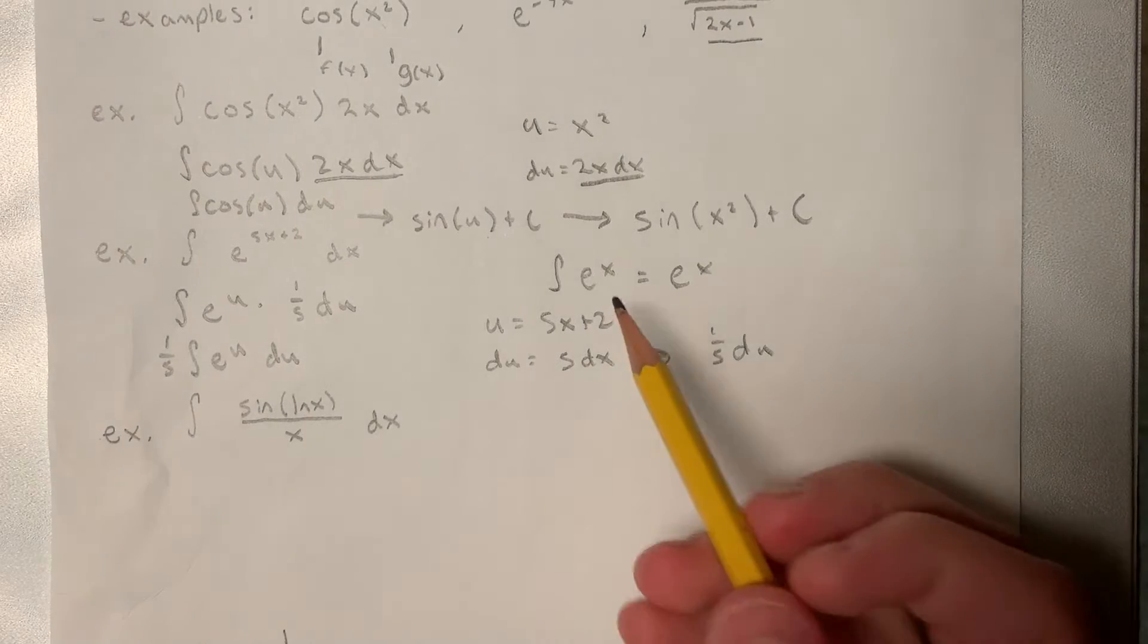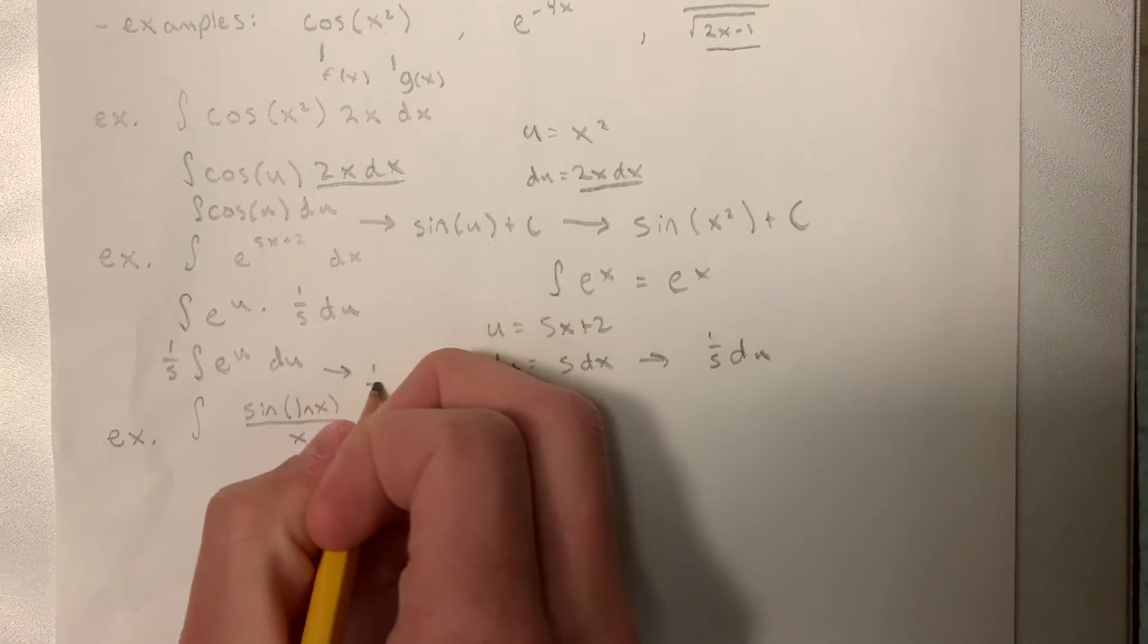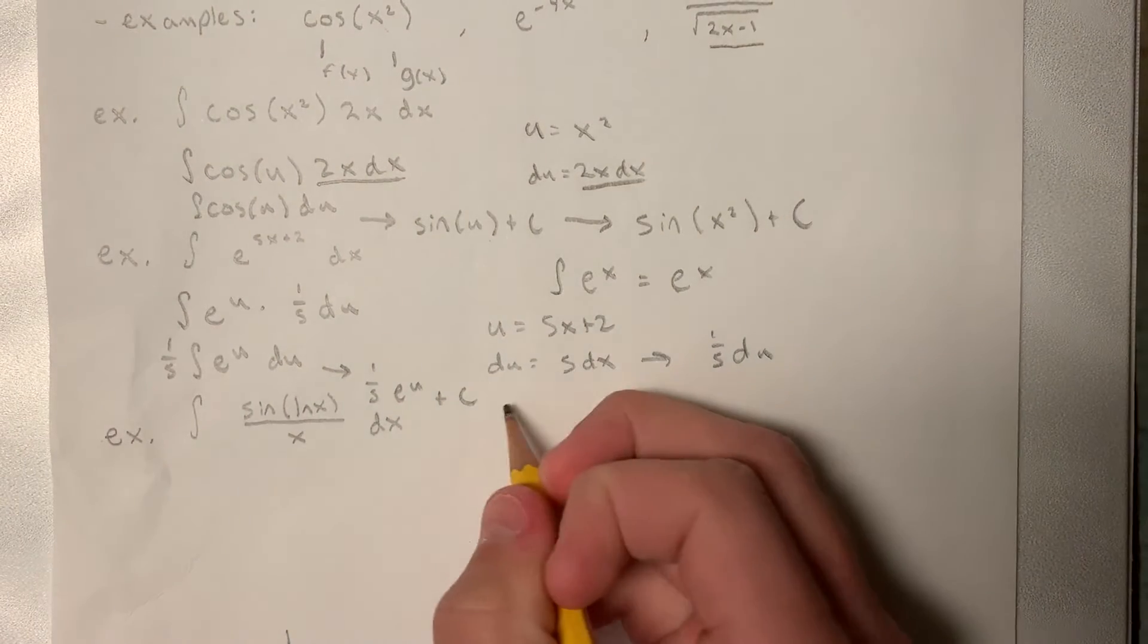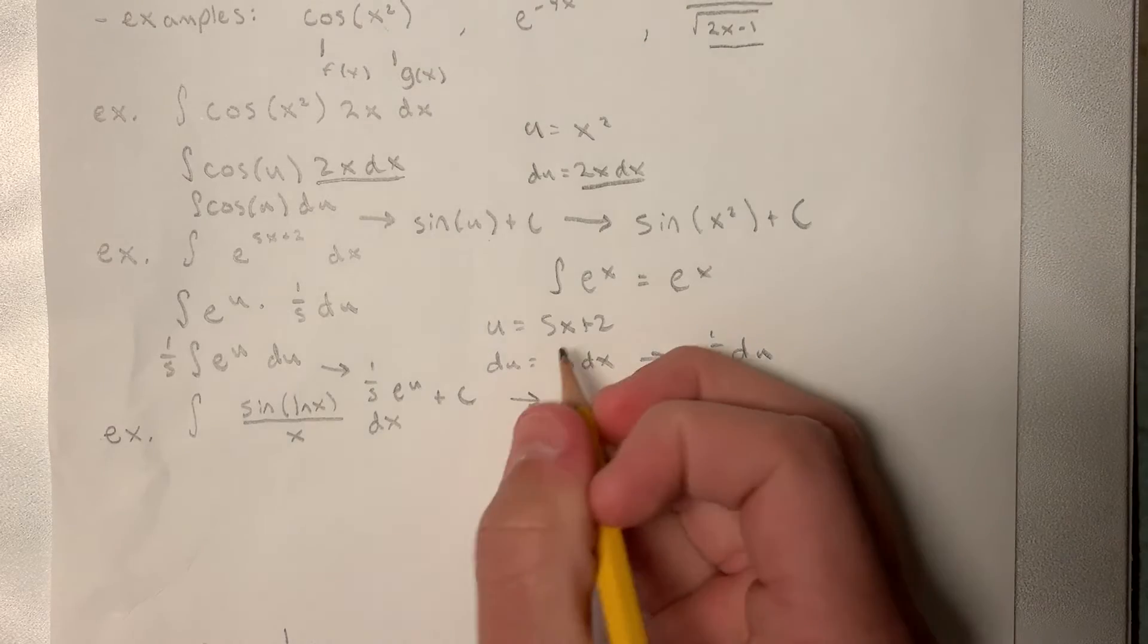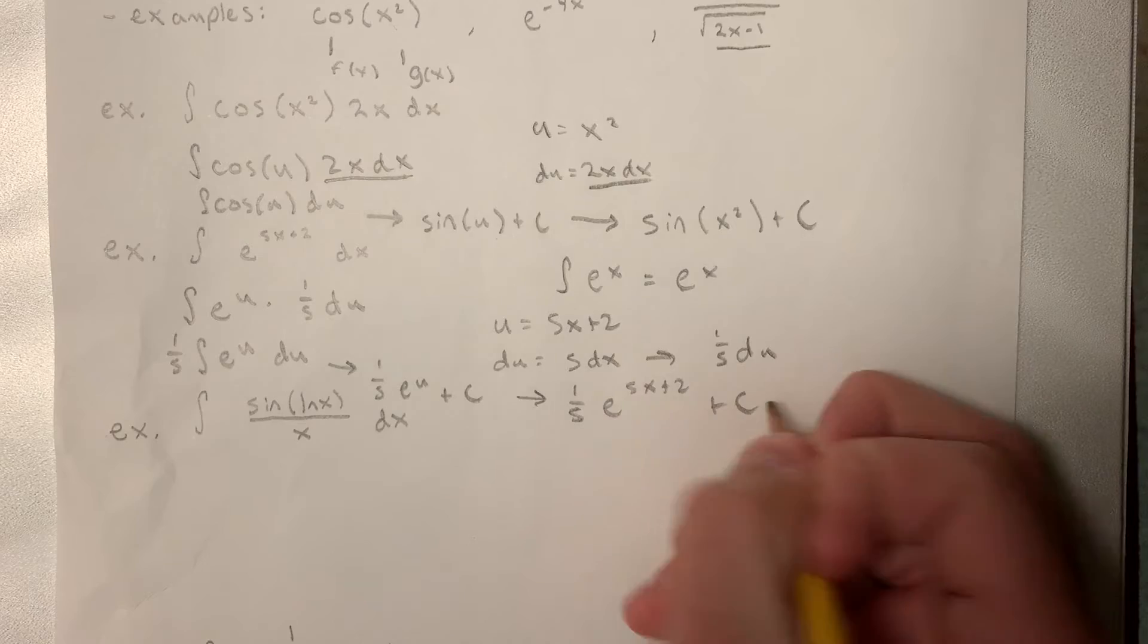Now we know how to solve that, that's just itself. So we have 1 fifth e to the u plus c. Which, plugging back in our u, we get 1 fifth e to the 5x plus 2 plus c.